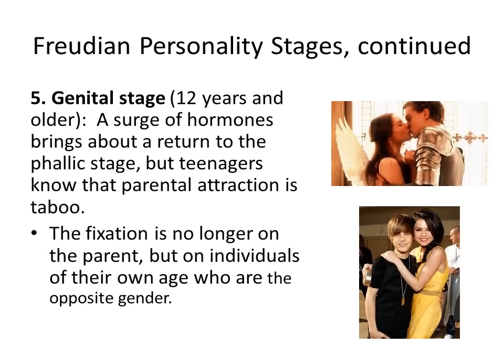The last stage is the genital stage, usually ages 12 to 18. Biologically, a surge of hormones brings about the return of the phallic stage — the fascination with the opposite gender. But teenagers have the conscious realization that being attracted to mom or dad is taboo. So the fixation is no longer on mom and dad but on their peer groups — people their own age of the opposite gender.